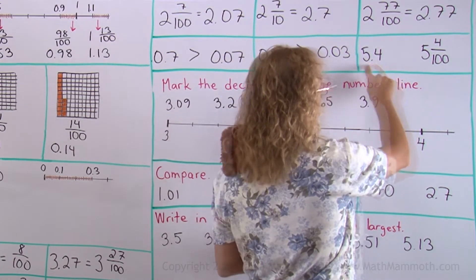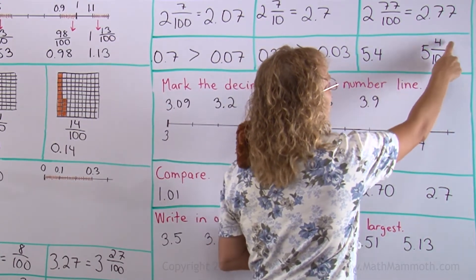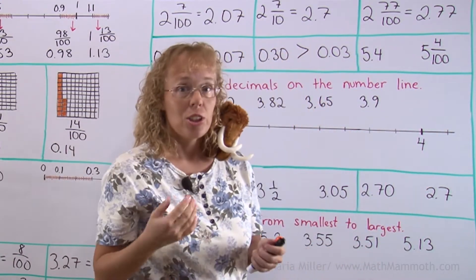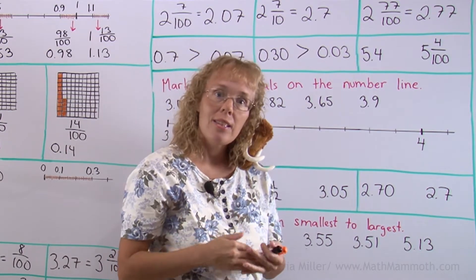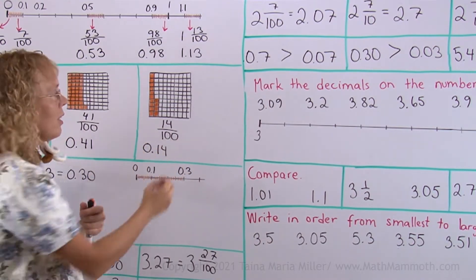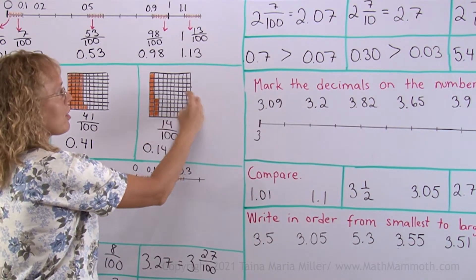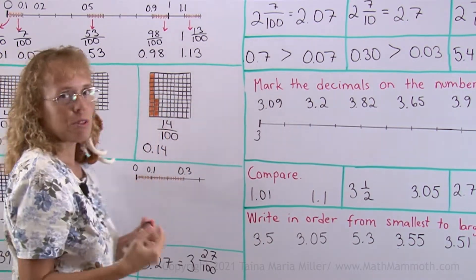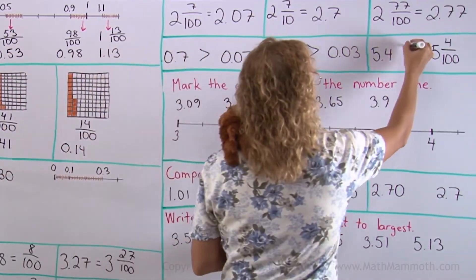And then 5 and 4 tenths, 5 and 4 hundredths. The question is, which one is more? 4 tenths or 4 hundredths? And again, you could use this and reason in a similar way. 4 little pieces is 4 hundredths. 4 whole columns would be 4 tenths, so that is more here.